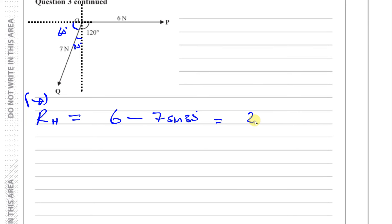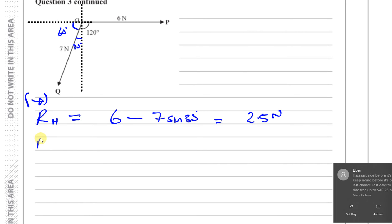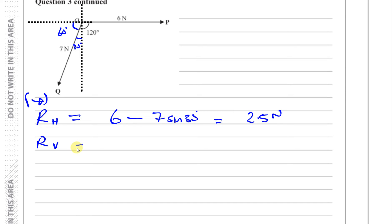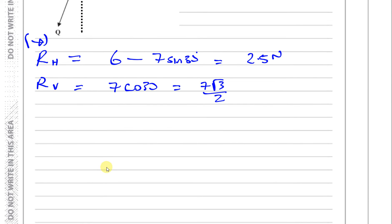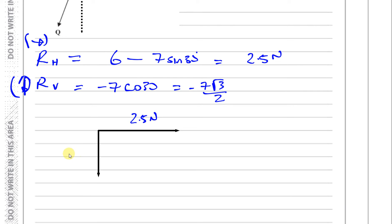For the vertical component, P has no vertical effect, so it's just Q's vertical component: 7 times cosine 30, which equals 7 times root 3 over 2. Taking upward as positive, this component is negative — so we end up with 2.5 newtons horizontally and minus 7 root 3 over 2 newtons vertically. We then find the resultant of those two components.